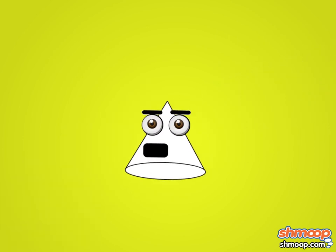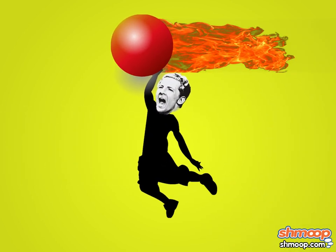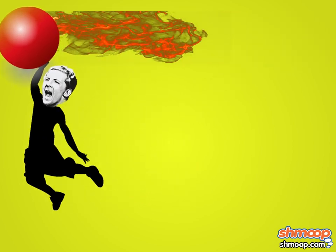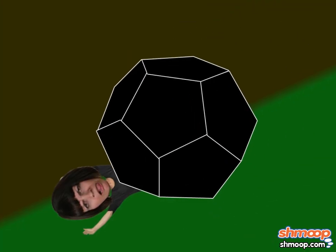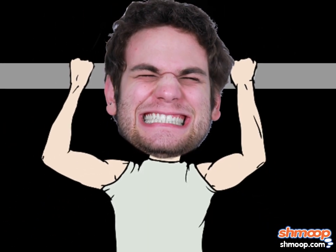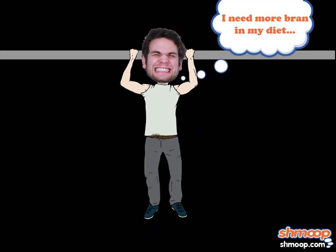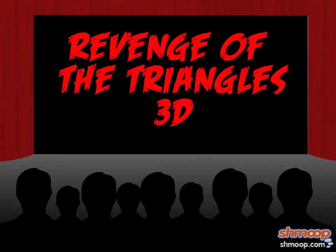And cones are pyramids with circular bases. Spheres are like balls, but don't try playing basketball with that one — they're not regulation. Those are the basic three-dimensional shapes, and the ones you'll probably see often. There are other ones like polyhedrons, but we won't blow your mind anymore for the time being. Now that you've got a grip on basic 3D geometry, you can sit back, relax, and enjoy Revenge of the Triangles in 3D.